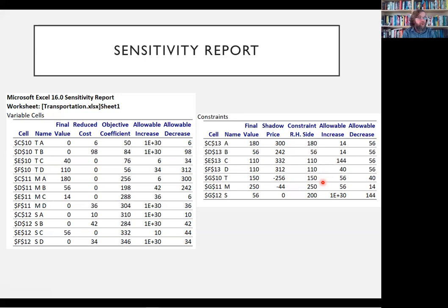If we had, because right now we're shipping out everything from T, if we had more available from T, we could use T instead of M and that would save us money. So for every additional unit we gained at T costs would go down by that amount within, as long as we were not increasing it by more than this or decreasing it by less than that.